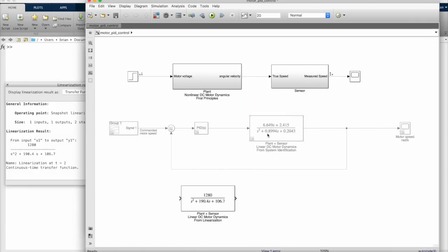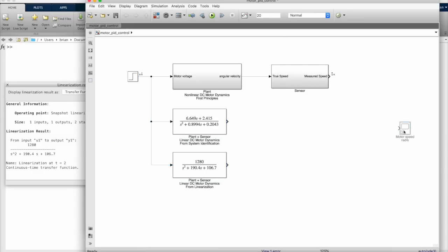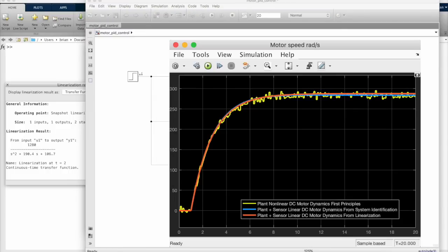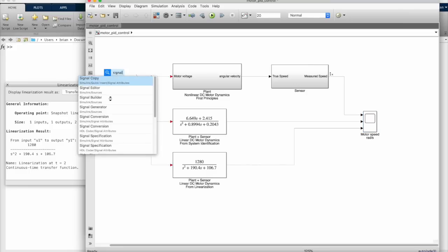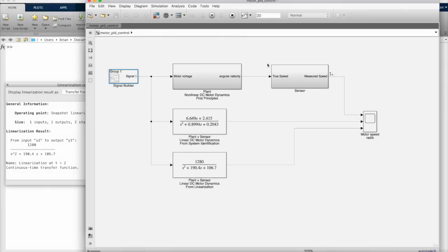Three different models of the same physical system. The first we generated by writing out the equations directly. The second we took input and output data from the model, or the physical hardware, and used system identification to fit that data to a model of our choice. And the third we linearized our nonlinear model around an operating point of our choice. These three models all seem pretty different. But you can see that they produce similar results, even with an arbitrary input.